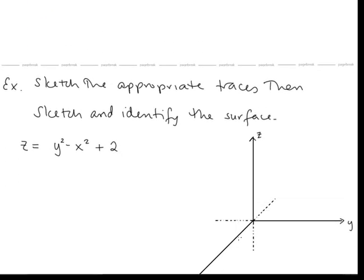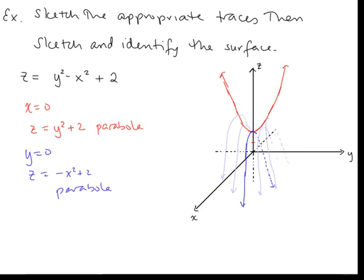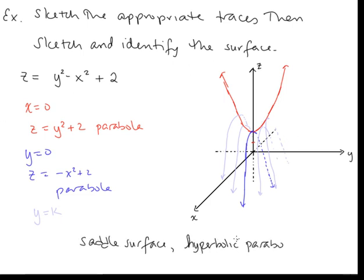For one more example, we have z equals y² minus x² plus 2. Setting x equals 0 gives z equals y² plus 2 — a parabola in the yz plane shifted up by 2 units (the red curve). Setting y equals 0 gives z equals negative x² plus 2 — a downward-facing parabola shifted up 2 units. Letting y equal other constants gives more parabolas attached to the red curve. This is a saddle surface — a hyperbolic paraboloid. When sketching these surfaces, always start by using your traces to establish the basis of the graph's shape. This concludes lesson 8 on quadric surfaces.